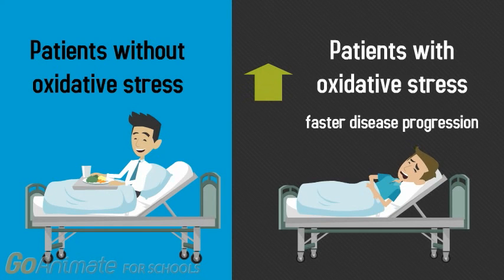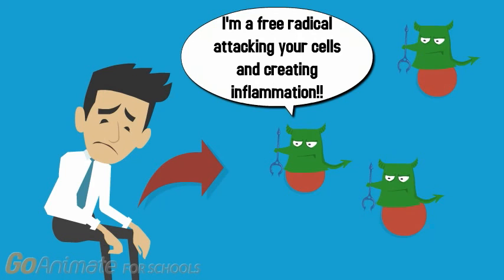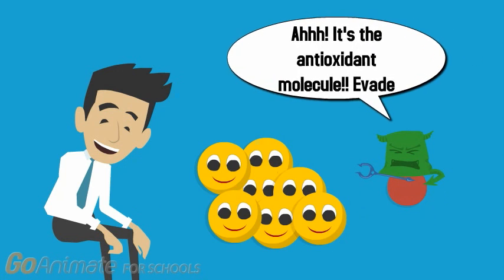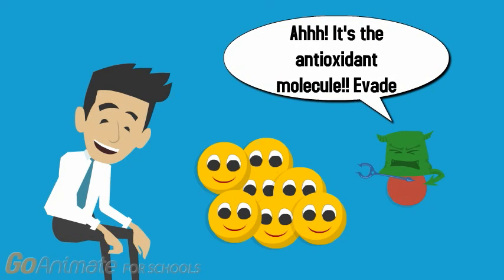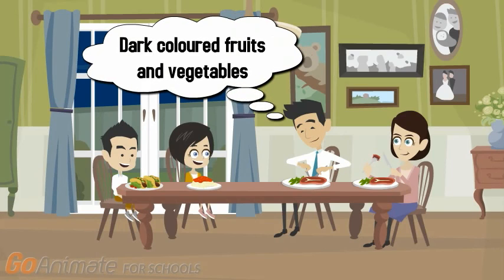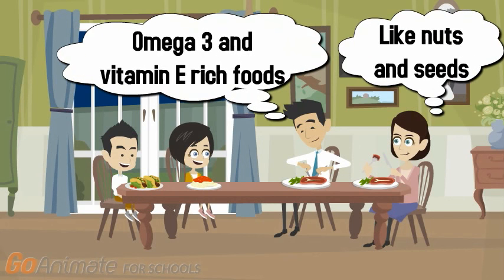Scleroderma patients experiencing oxidative stress will have faster disease progression. Oxidative stress is the result of free radicals, which are molecules that damage cells in the body. Antioxidants help combat the damages done by these free radicals. In order to increase antioxidant intake, patients should eat dark-colored fruits such as blueberries and dark-colored grapes, as well as vegetables. They are also encouraged to eat omega-3 fatty acid-rich foods like flax seeds and vitamin E-rich foods like various nuts.